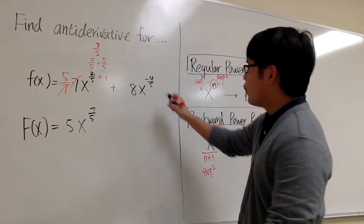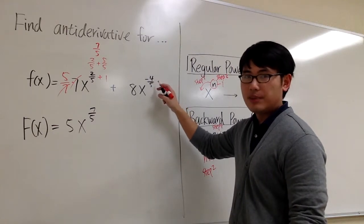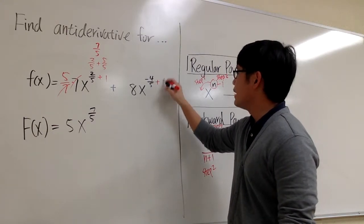And now let's look at the second part. We have 8x to the negative 4 over 5, and this right here is the exponent. So I'm going to add one to the exponent.